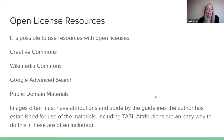A great way to leverage resources you haven't created but would like to use is by using open license resources — Creative Commons, Wikimedia Commons, Google Advanced Search, and public domain materials. These images often have attributions right in them and abide by the guidelines the author has established. A good best practice is to include the TASL attributions, as many resources will put the citation in there for you.